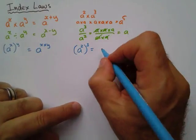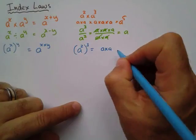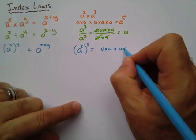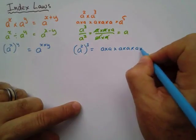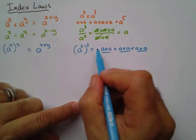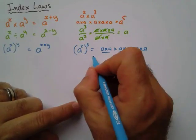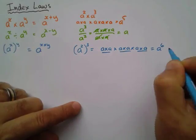So let's go a to the power 2 to the power 3. That means it's a times a once, times a times a twice, times a times a three times. The answer is a to the power 6,